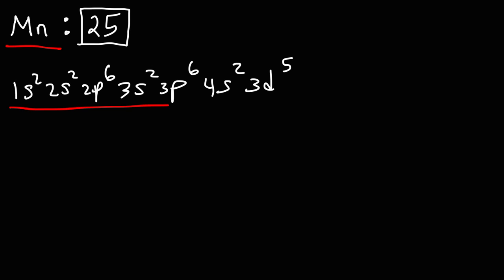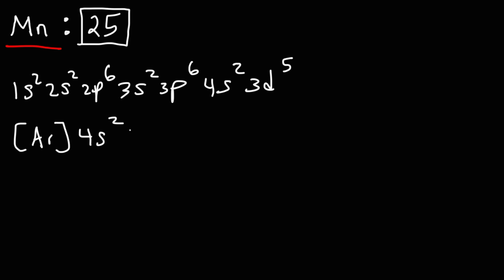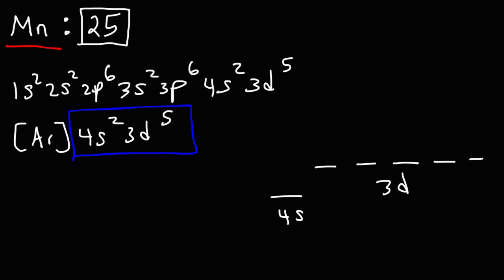Note that the first part is the electron configuration of argon, so you can use noble gas notation by replacing everything up to 3p6 with argon, giving [Ar] 4s2, 3d5. We'll draw the orbital diagram for just this part, since everything before it is paired. The 4s sublevel has two paired electrons, and the 3d sublevel has five electrons added one at a time. So we have five unpaired electrons, meaning manganese is highly paramagnetic.